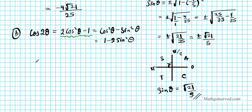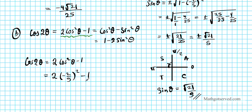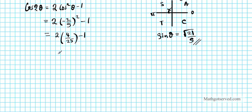So we'll use the formula cos 2θ equals 2 cos²θ minus 1. We have 2 times negative 2 over 5 squared minus 1. Squaring top and bottom gives 2 times 4 over 25 minus 1, which equals 8 over 25 minus 25 over 25. Subtracting the numerators gives negative 17 over 25 as the value for cos 2θ.